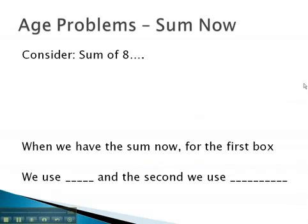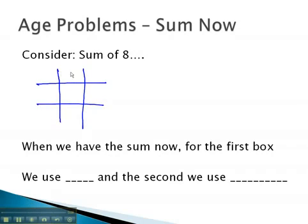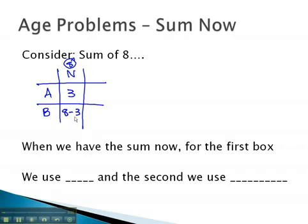In this video, we will take a look at finding the age of people when we're given the sum of their ages. To set this up, let's consider if we are told the sum of two individuals is 8. Let's say the first person is 3 years old. The second person we could quickly calculate by taking the total, or 8, minus 3.